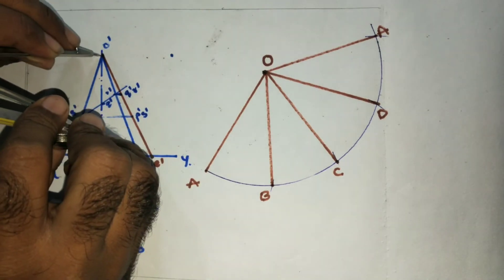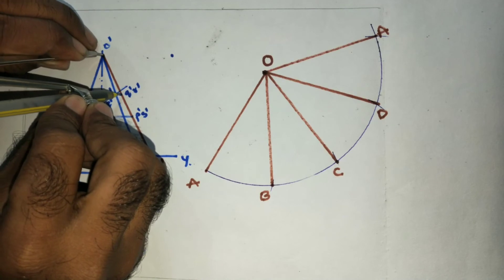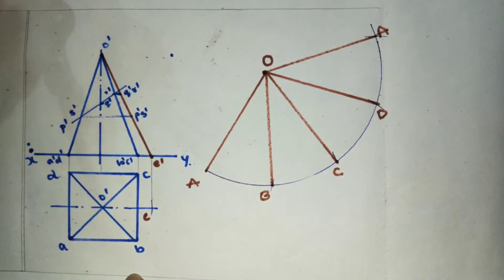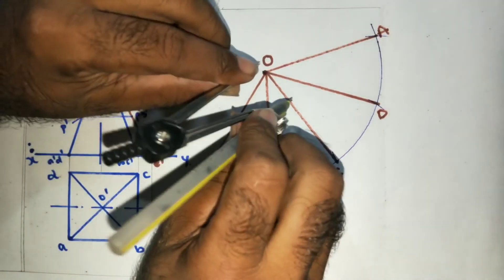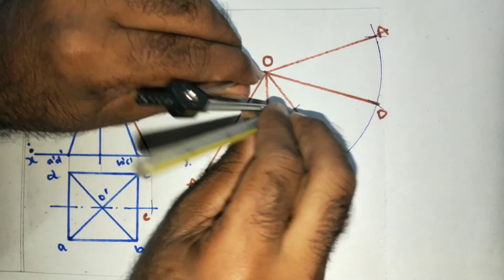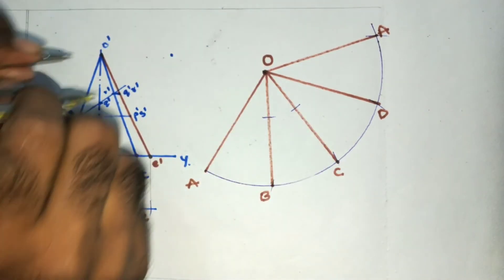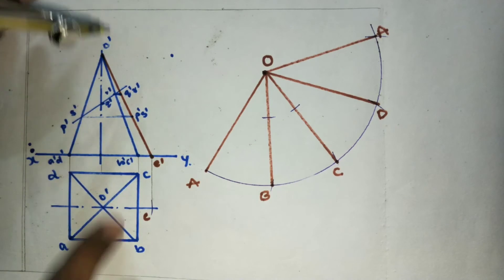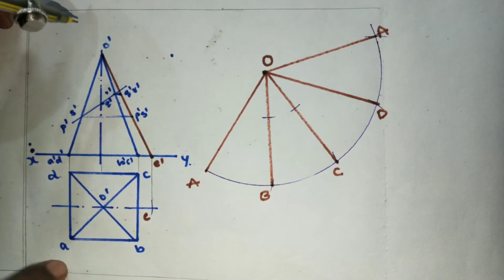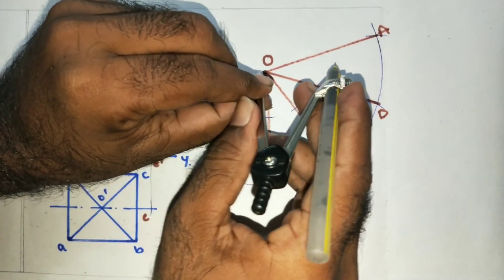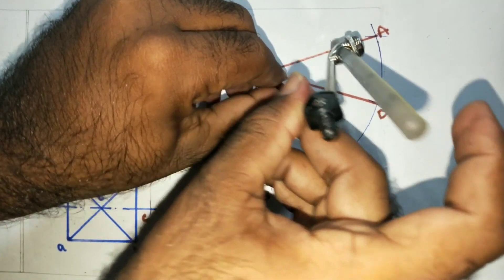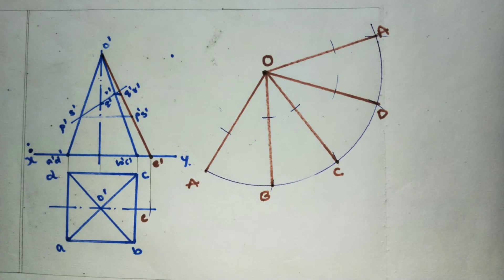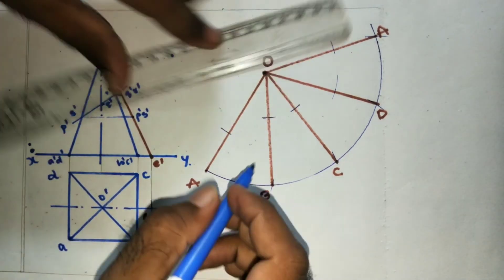By using a compass, we will do the measurement. Mark Q, R, B and C. We will cut with the compass. From the same O' to P' and S', use the compass to mark P' and S'. Then mark P, S and A, D. For the second parallel, cut with the compass for points P, Q, R, S and P.